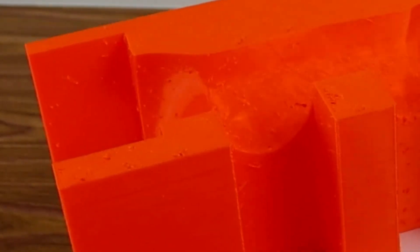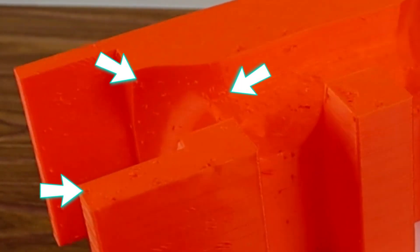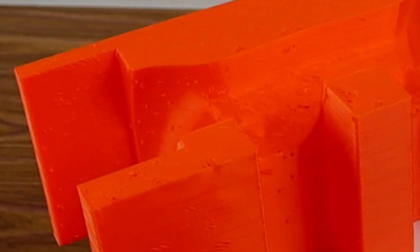As you can see, the TPU is very strong but it's difficult to print with because of its flexible nature. There was a lot of cleanup due to the stringing. With some tuning we could get better results. This part cost us five dollars Canadian in material to print.